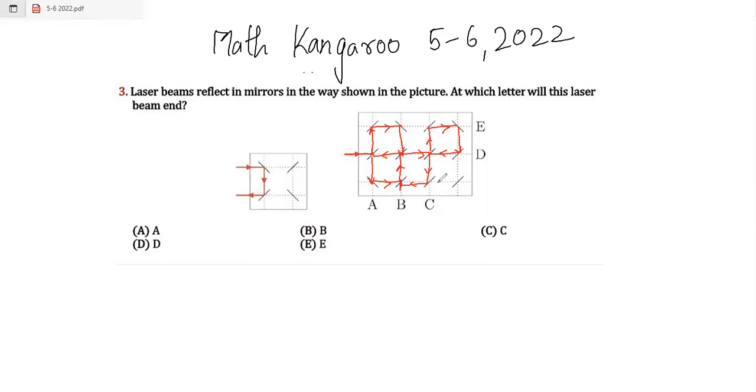It will go here, here, here, then it will come here, and from here it will just end here because it cannot reflect back. From here it will come here. So at which letter will it end? It will end at letter B. So my answer will be option number B.